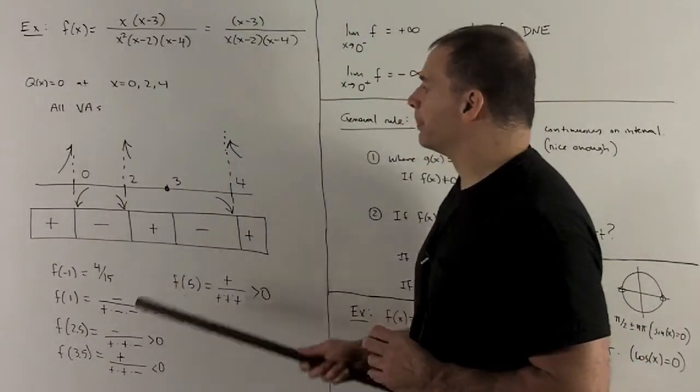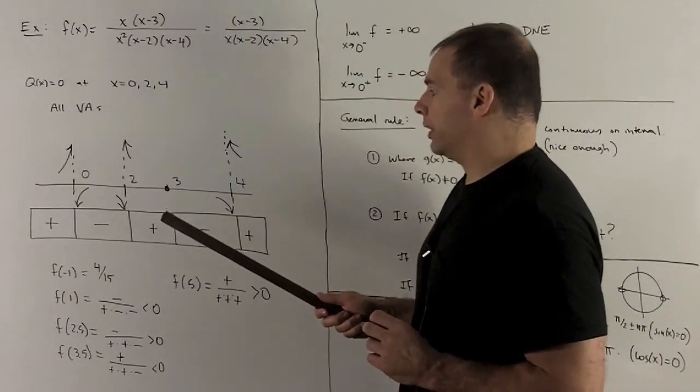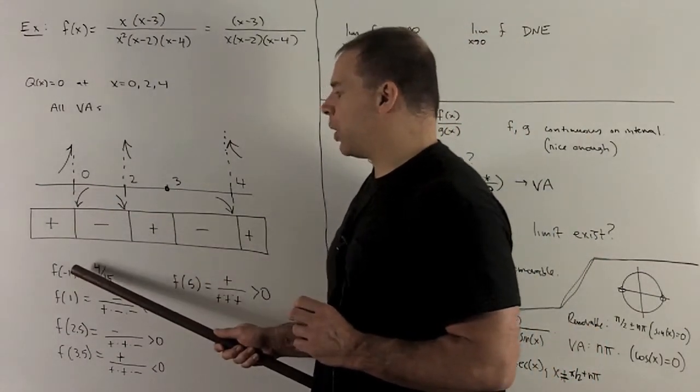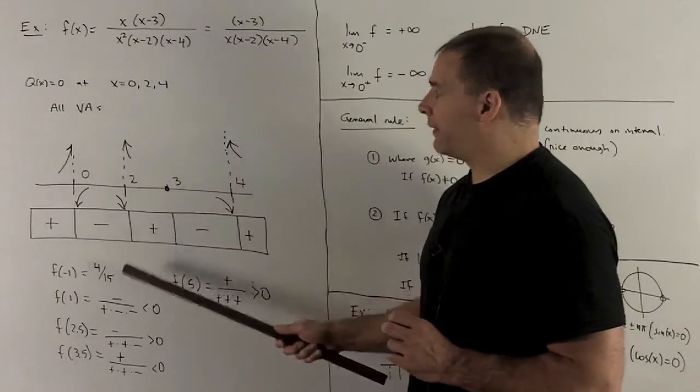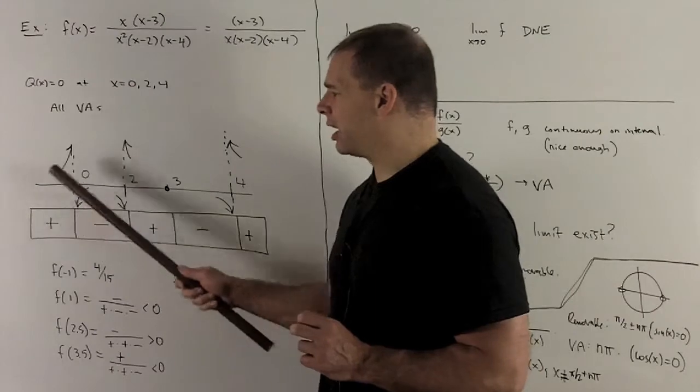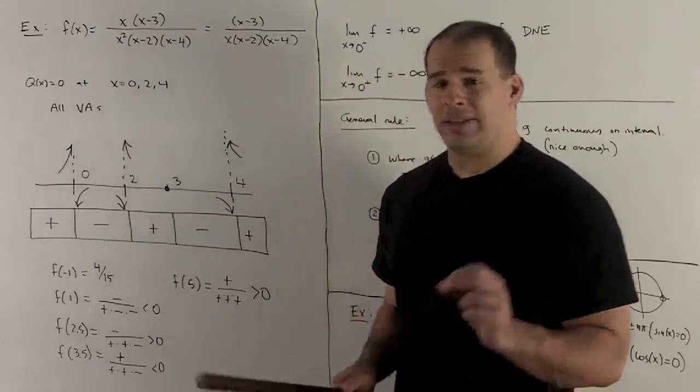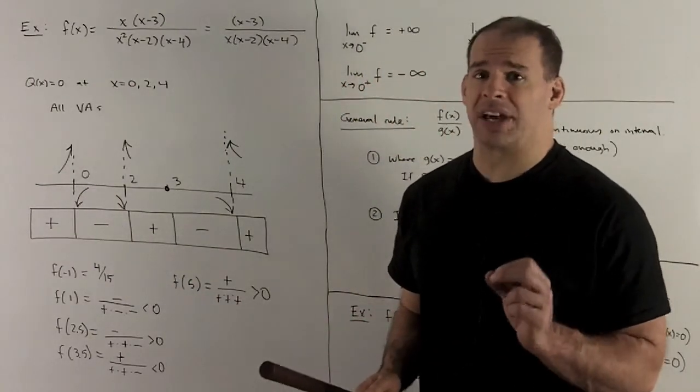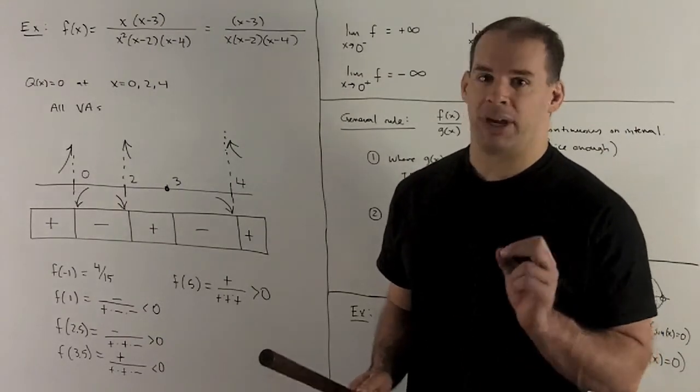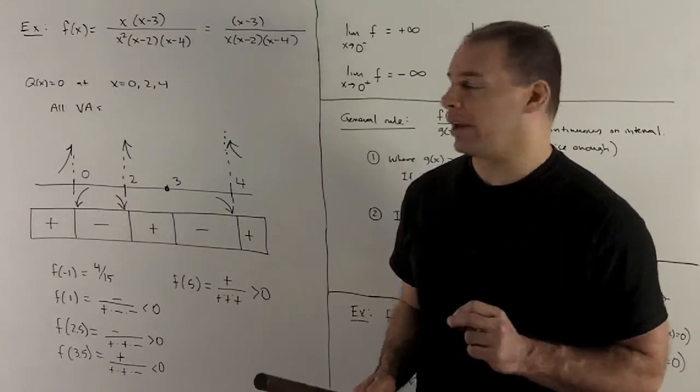We're going to check a point in each region. So, if I'm on this side of 0, I could put minus 1 in. We're going to get 4 fifteenths out, and then we note that's a positive number, so this is going to be positive on this entire side of 0. That's going to force the vertical asymptote on that side of 0 to go up to plus infinity, because if it's always positive, you're never going to go negative, so you can't go near negative infinity.